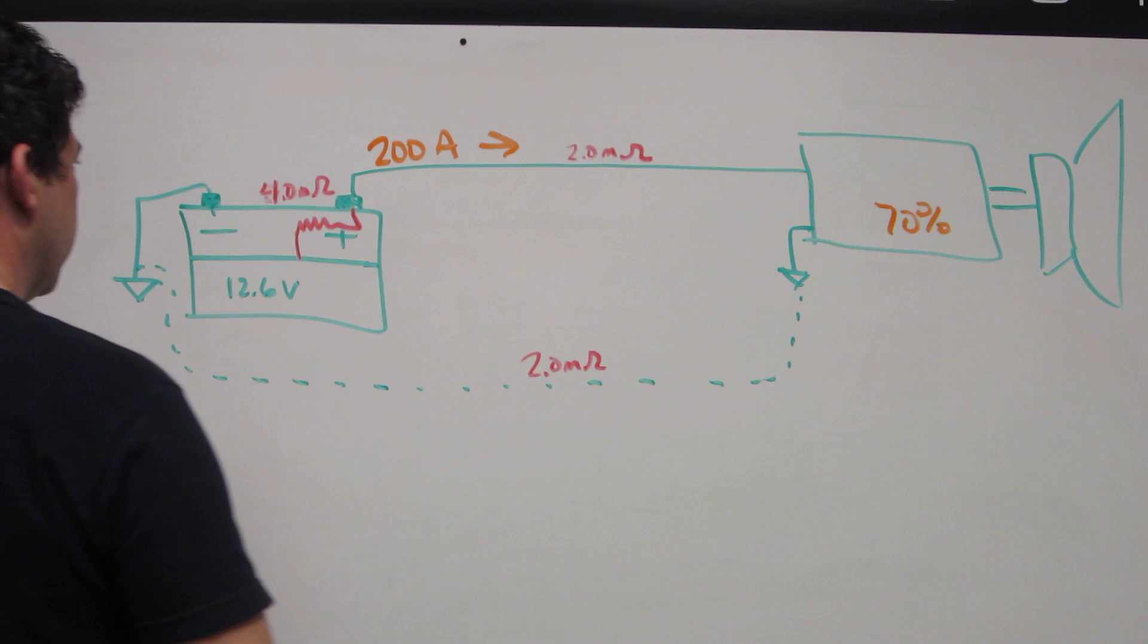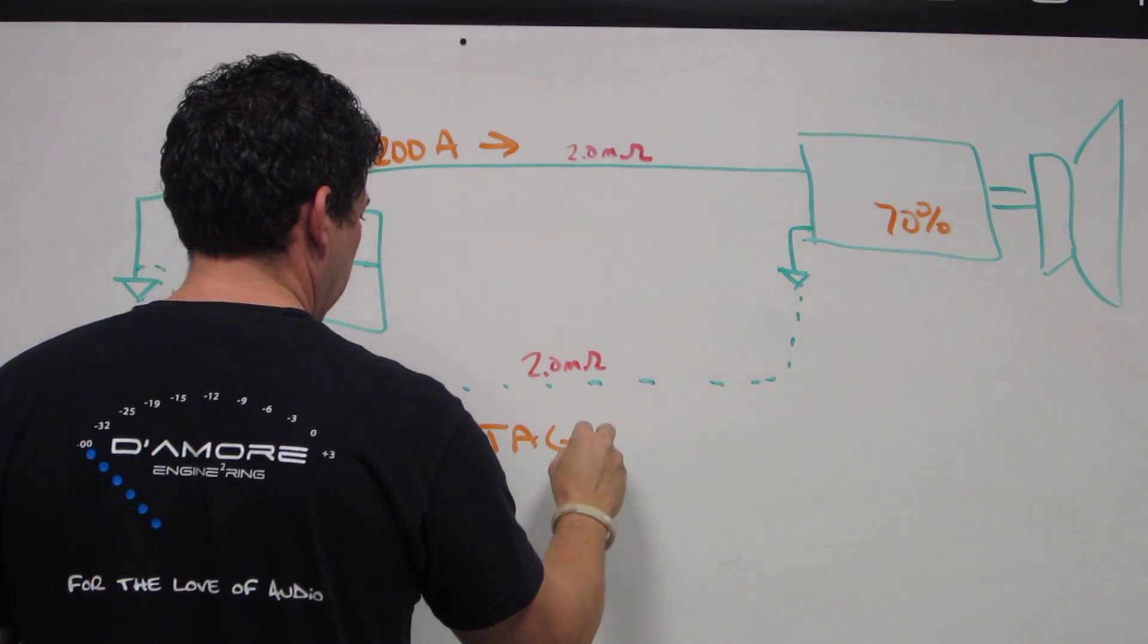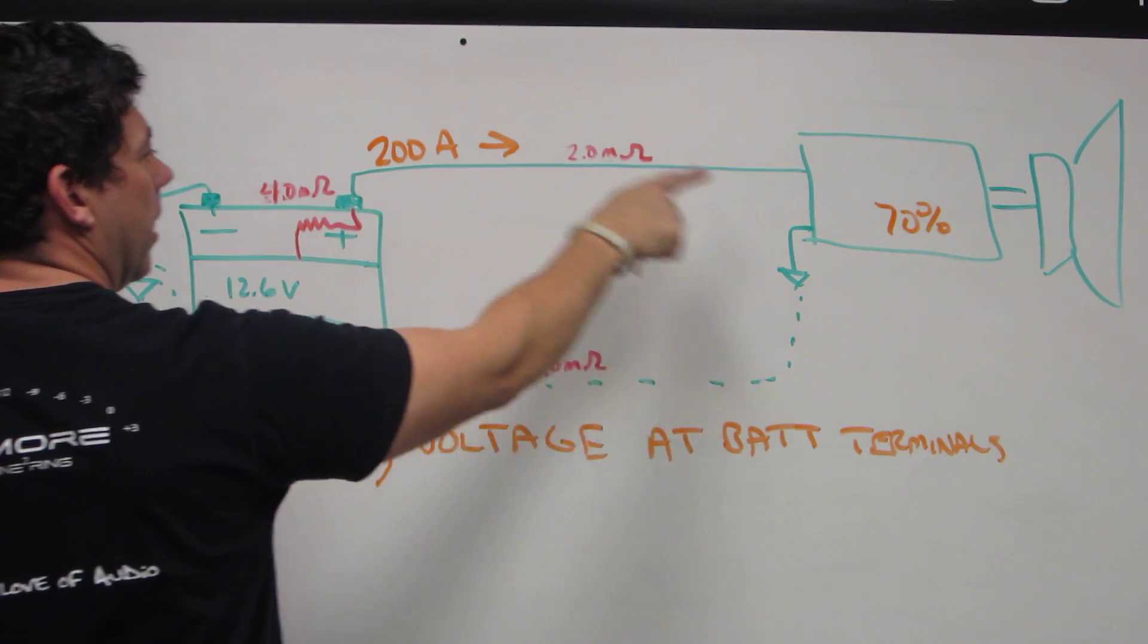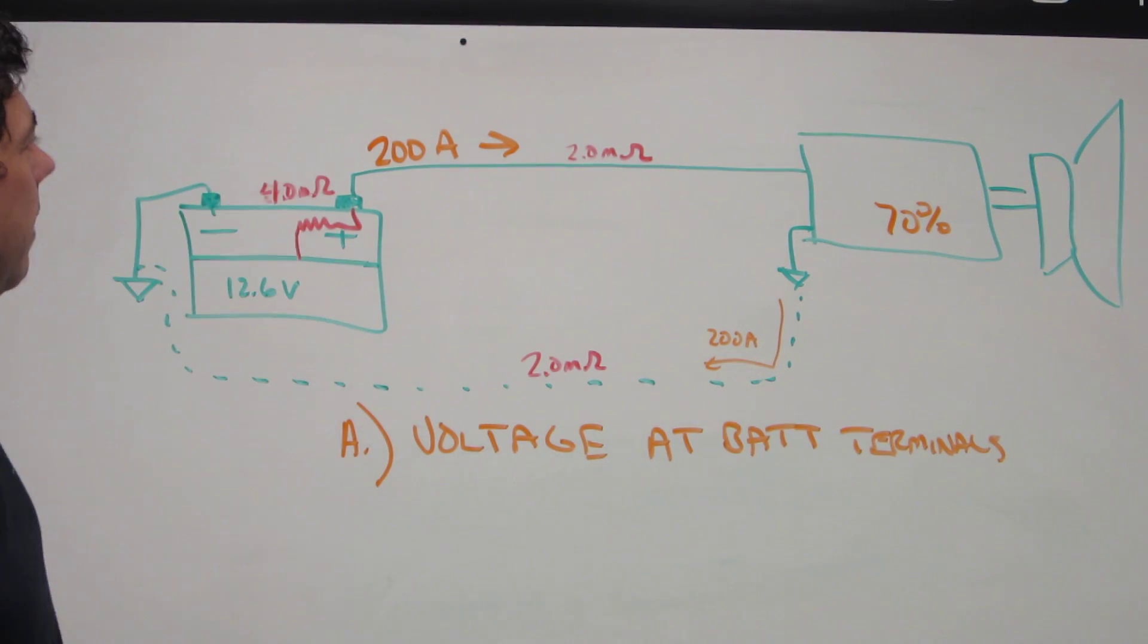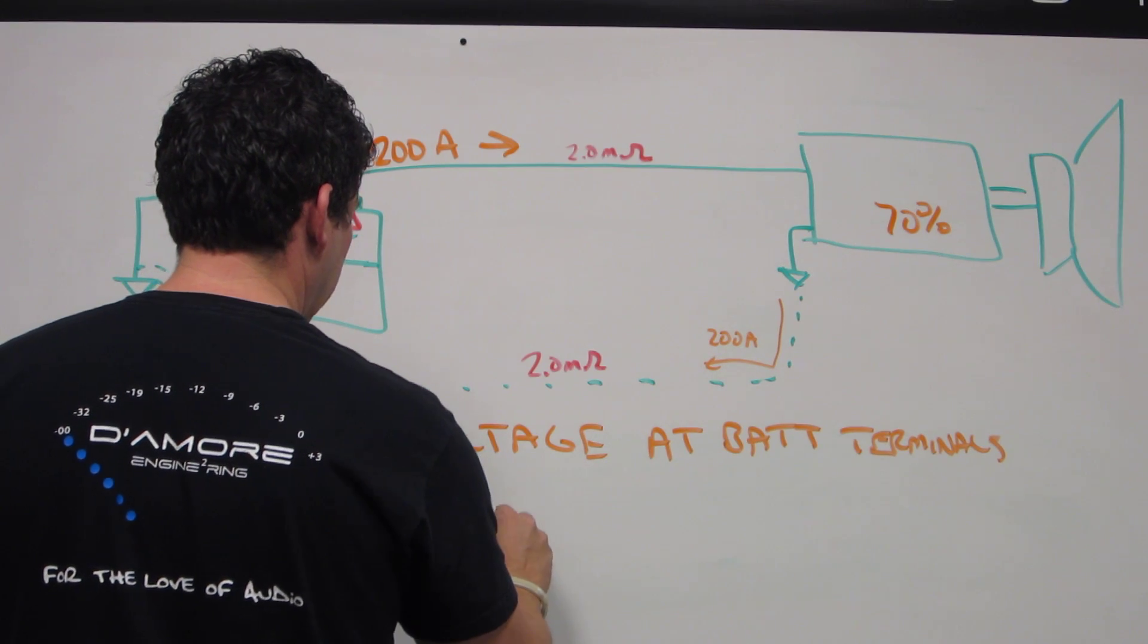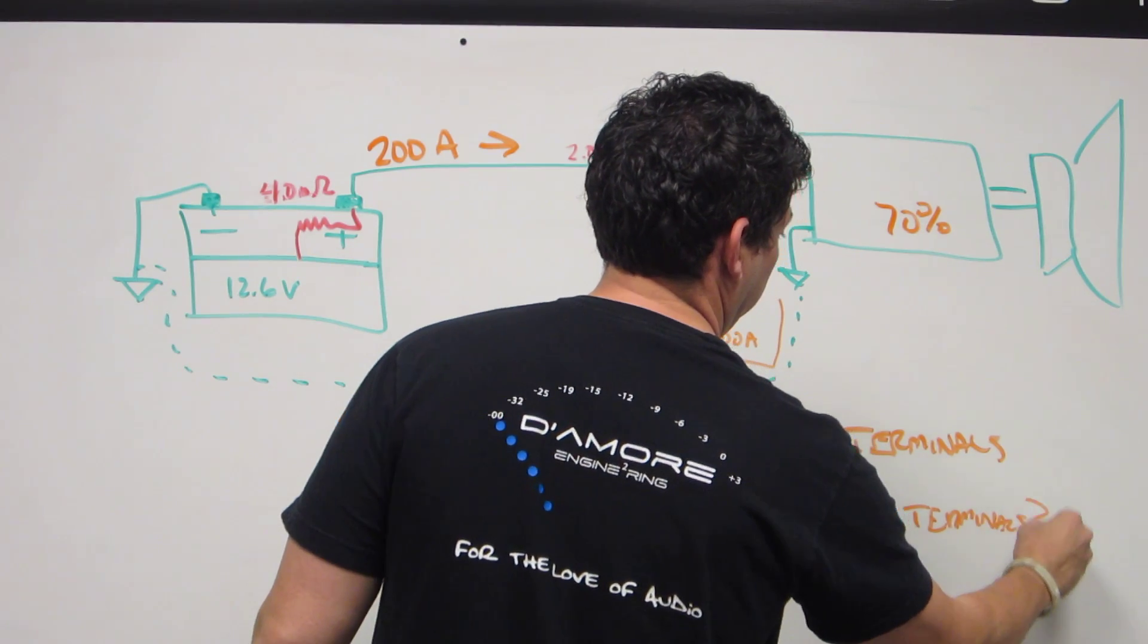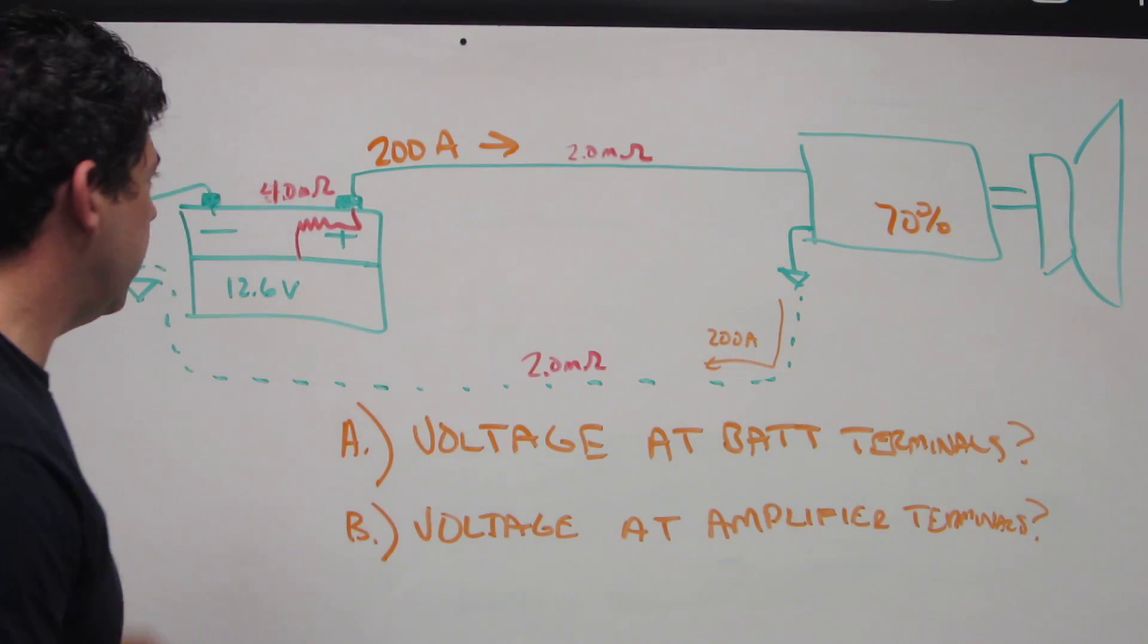So the homework assignment is A, what is the voltage at the battery terminals during this 200 amp load? Remember the 200 amps is coming out of the battery and then it's returning through the ground path. What is the voltage if I took a DMM and put it right here on these battery terminals? What's that voltage going to read during this condition? B, what's the voltage going to be across the amplifier terminals during this time? Right here, here and here. Remember there's losses here, there's losses there, there's losses here. So what are we going to see right here?